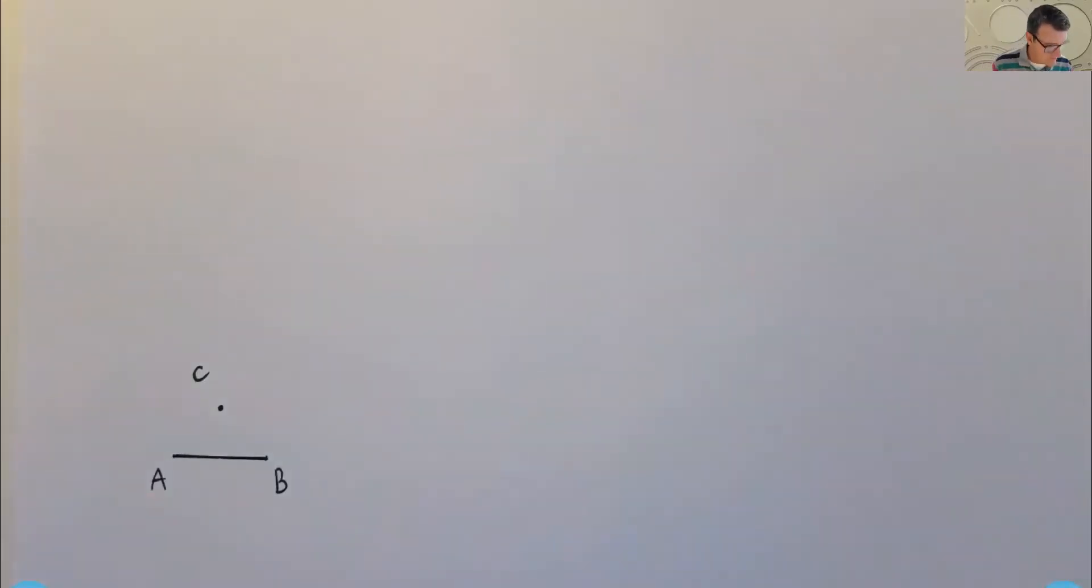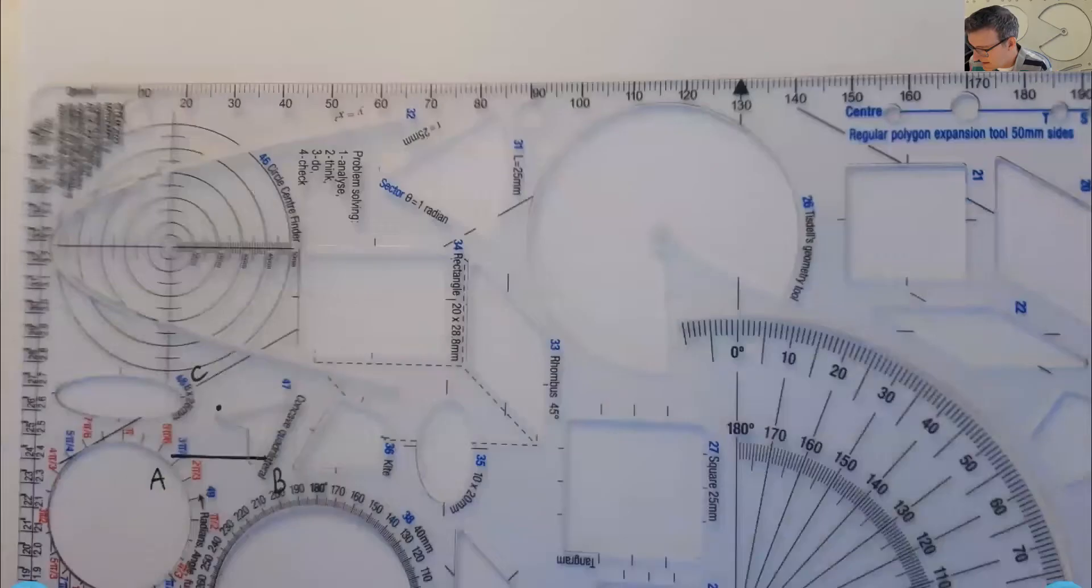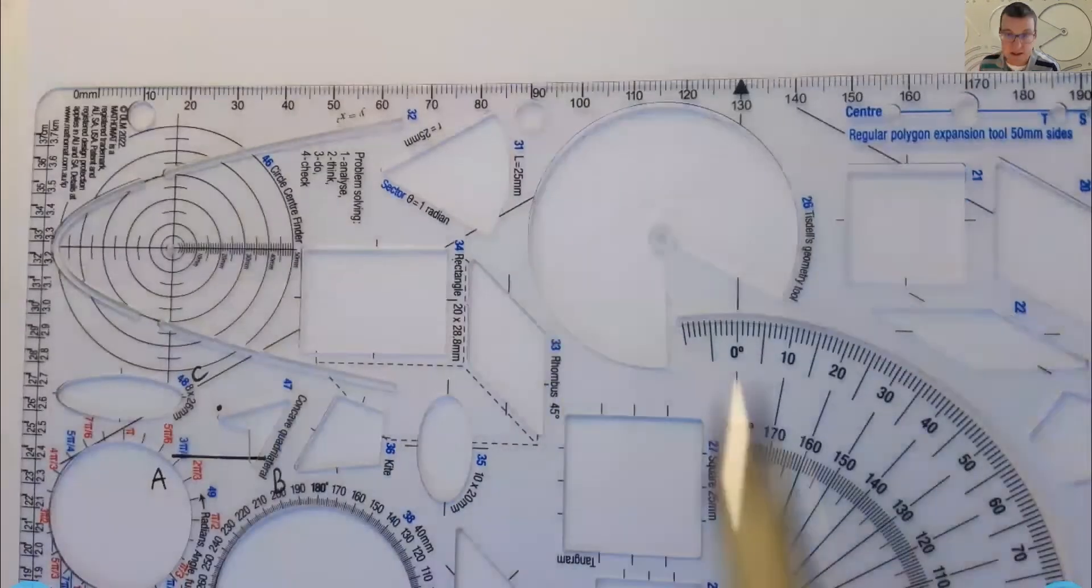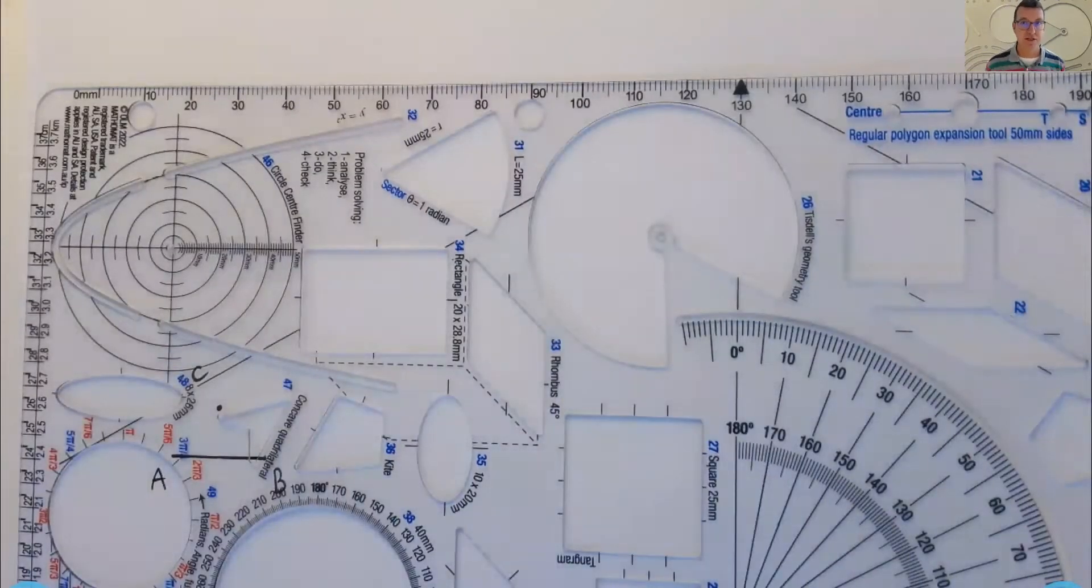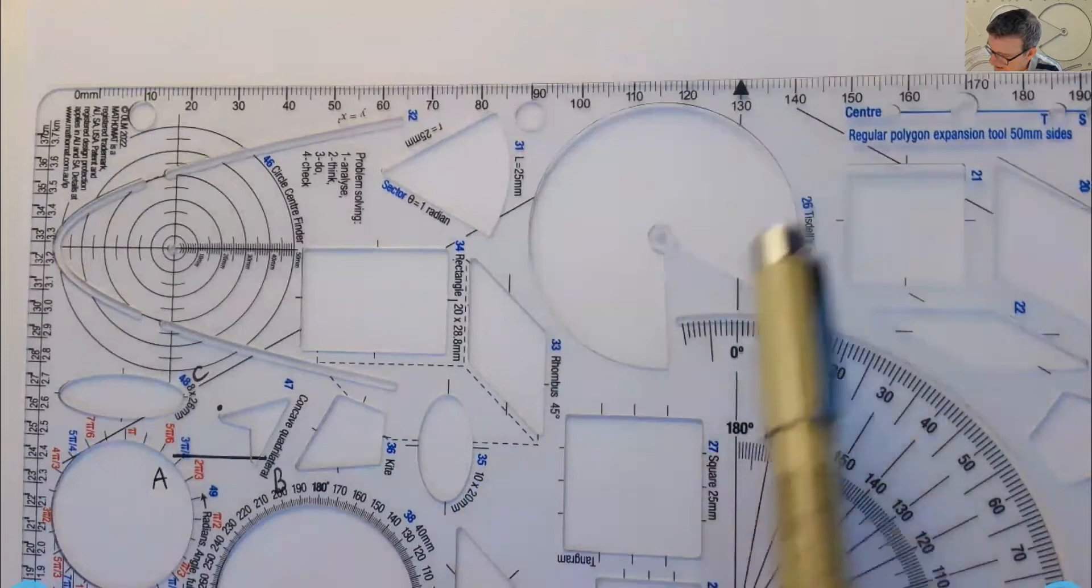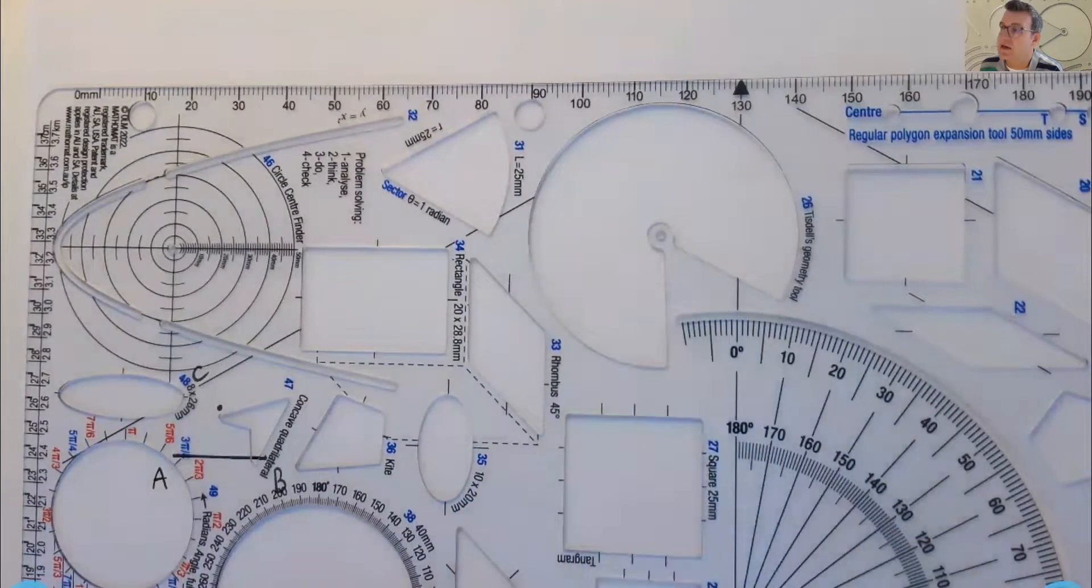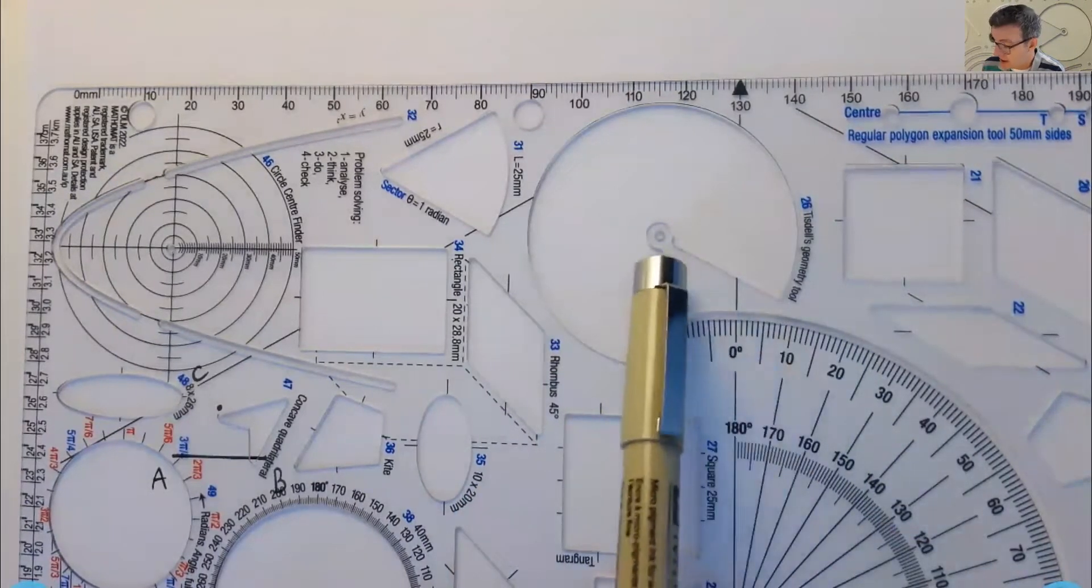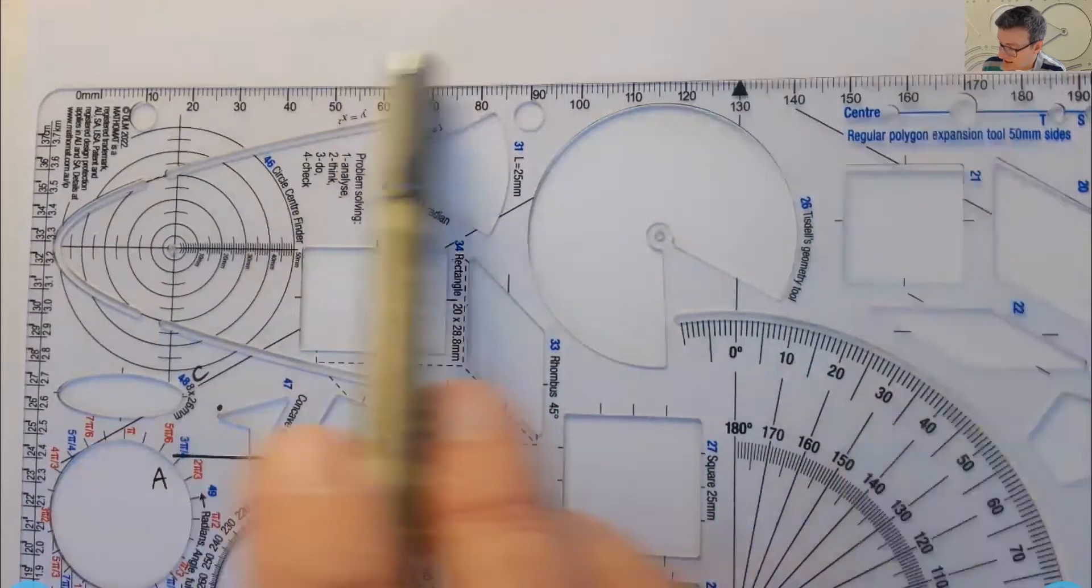All right. So the tool is here. This is a printed version. In the background, I've got an unprinted or naked version. And this is called a circle arc template. You can position the center point on any point you like, and you've got a straight edge.